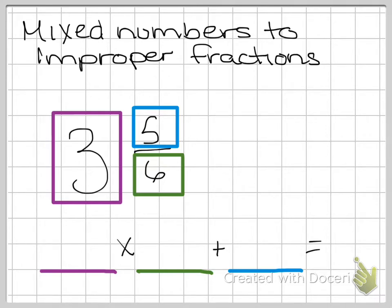So when we use the linear method, what we need to do is take our whole number, which is 3 and boxed in purple, and then multiply that by 6, which is our denominator and boxed in green, and then add 5, which is our numerator and boxed in blue, just like that.